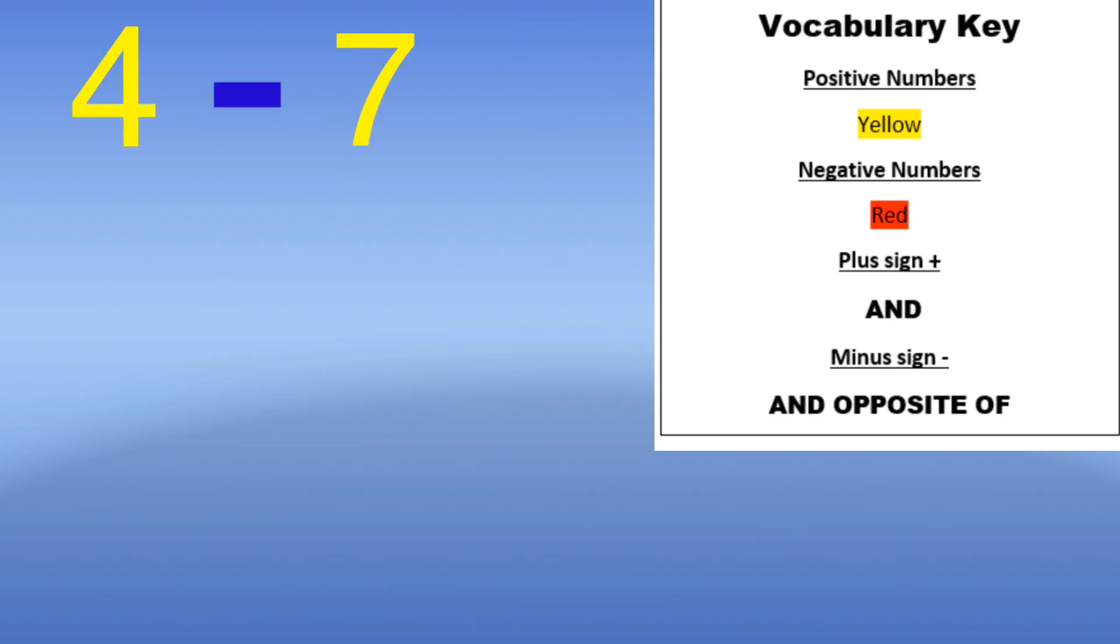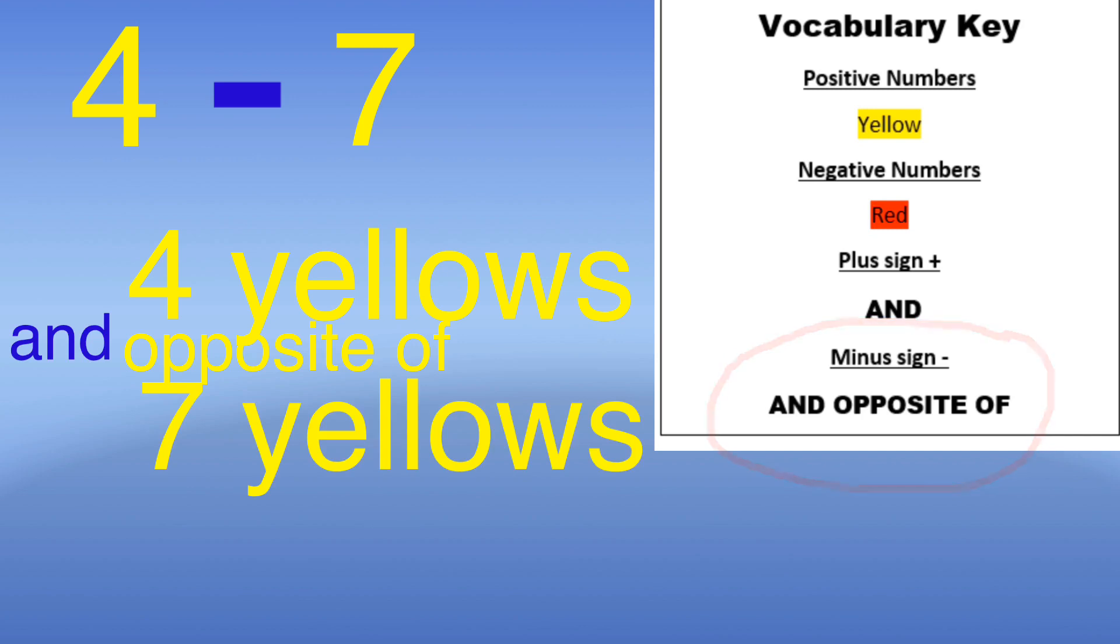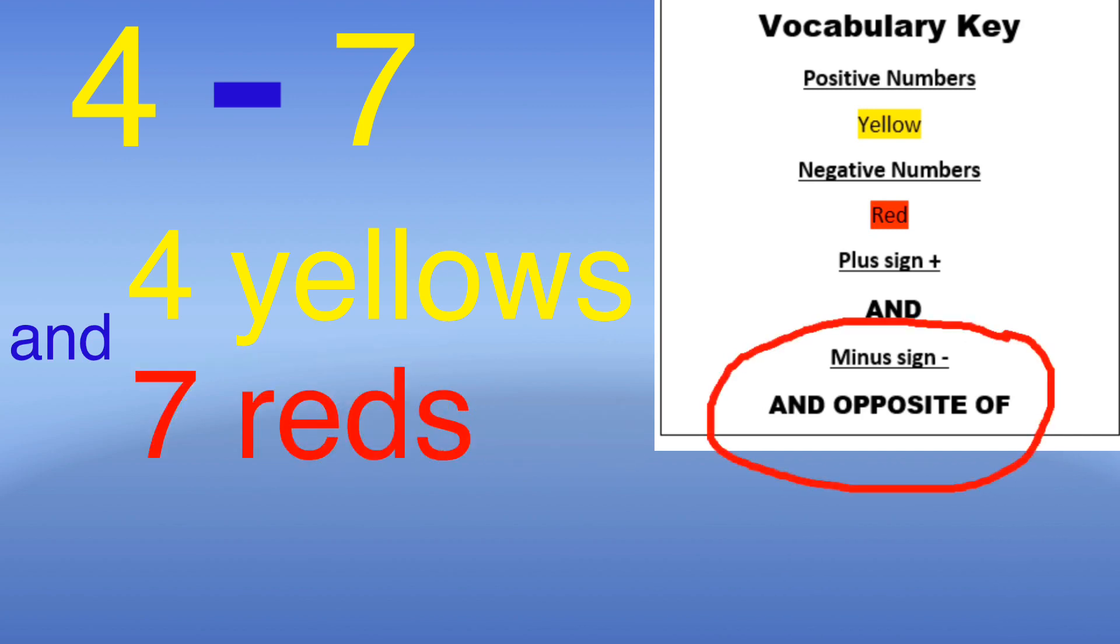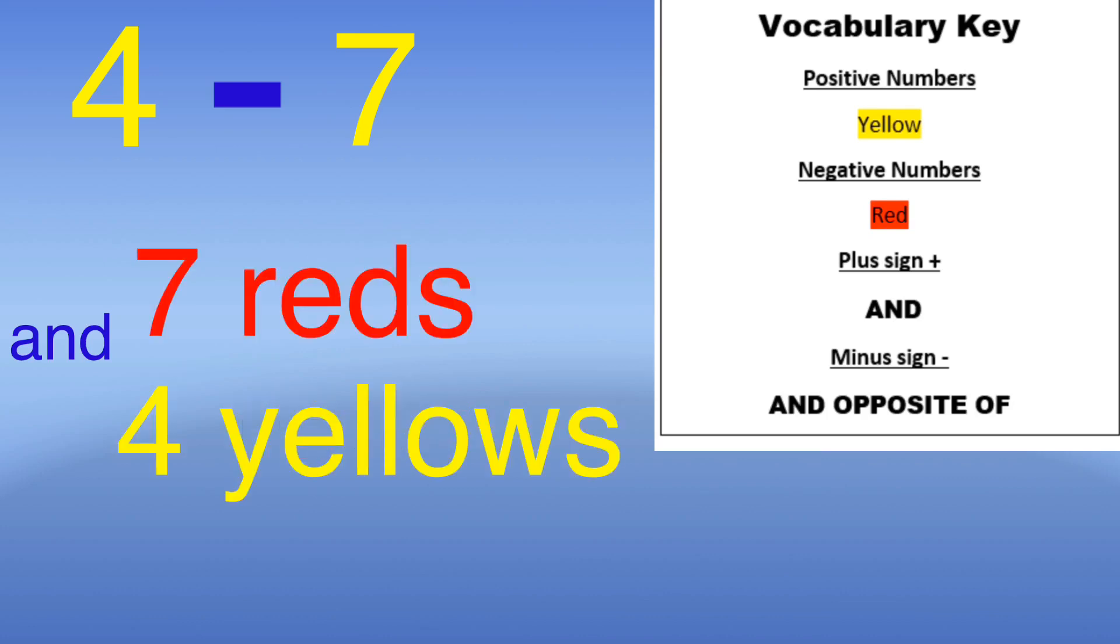Now for my last problem we will do four minus seven, which will give me four yellows and the opposite of seven yellows, which is seven reds. Since my colors are different I'm going to switch them so that I can take away from the color that has the most. Seven minus four is equal to three, and so since seven has more the color is red, making the answer to this problem negative three.